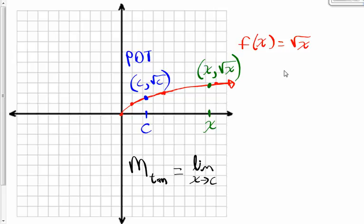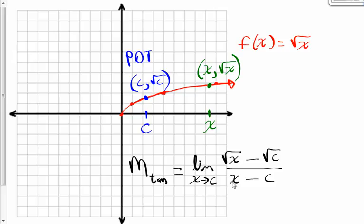I'm going to take y2, the square root of x, minus y1, the square root of c, divided by x2, which is x, minus x1, which is c. Upon initially plugging c in, I get the square root of c minus the square root of c, which is 0, divided by c minus c, which is also 0. So I get 0 over 0 — the indeterminate form.